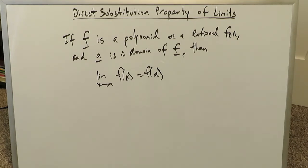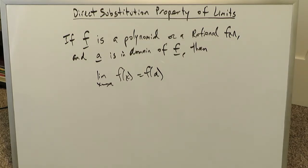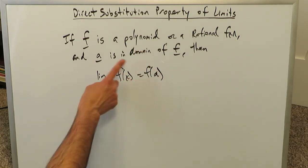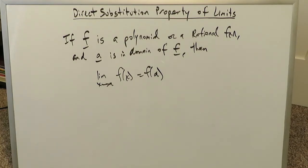The direct substitution property of limits is an excellent shortcut to limits for polynomials, especially when you're evaluating a limit as x approaches a given value a for a polynomial. A polynomial could be something like ax squared plus bx plus c — anything which has a polynomial format. If a function is a polynomial, or in addition to that a rational function, this direct substitution property of limits would generally apply. If the function is a polynomial or a rational function and this value a is in the domain of that function, then the limit of f of x as x approaches a is equal to f of a.